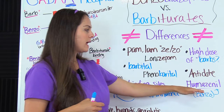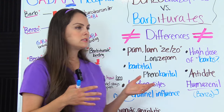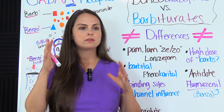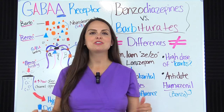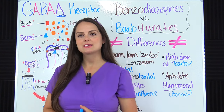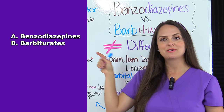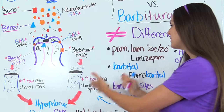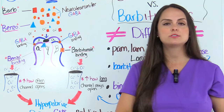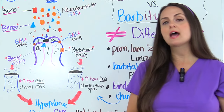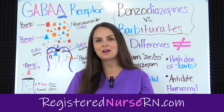With benzodiazepines, there is an antidote called flumazenil, which can be used to reverse the effects of benzodiazepine toxicity. It needs to be used with caution — the physician must determine whether the benefit outweighs the risk. Now let's test your knowledge: which CNS depressant causes the chloride channel to stay open longer — benzodiazepines or barbiturates? The answer is barbiturates. Barbiturates increase how long the channel stays open, causing more chloride to flow into the cell, hyperpolarizing it and giving us a depressed central nervous system. Benzodiazepines increase how often that channel opens. For more free quiz questions on this material, you can access the link in the YouTube description below. Thank you so much for watching.